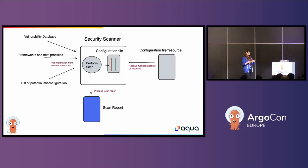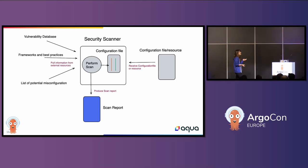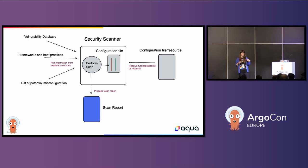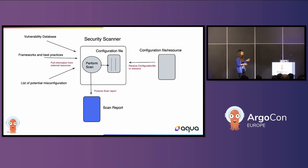Security scanners also take in a list of misconfigurations. So whenever you're using a Dockerfile, Kubernetes YAML manifest, Helm charts, Terraform, or CloudFormation, you're ultimately setting up configurations for your application — and it's really easy to introduce misconfigurations. A security scanner will likely have a list of common misconfigurations that goes into the security scan. You provide it the resource you want to scan, the scanner compares that information with what you actually set up, and then it produces a scan report. That's at the highest level how a security scanner would operate.